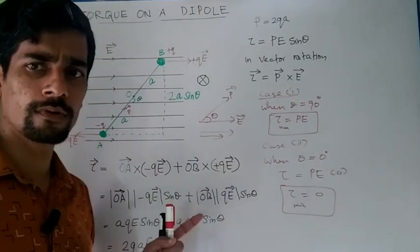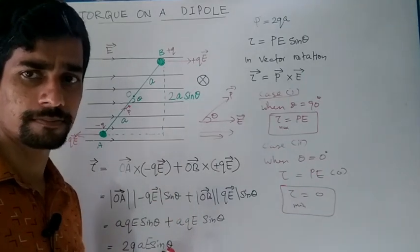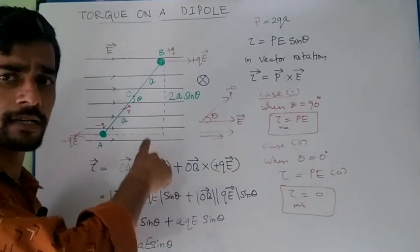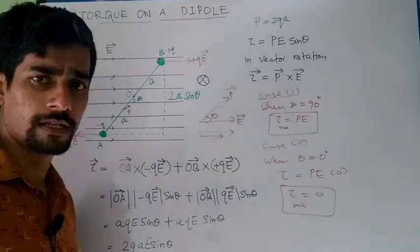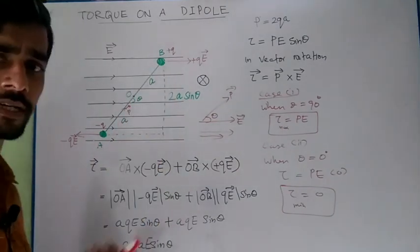Now, if the dipole is placed in a non-uniform electric field, in this case we have considered the electric field to be uniform, so we can say that the two forces are equal in magnitude but opposite in direction, so they will cancel out.